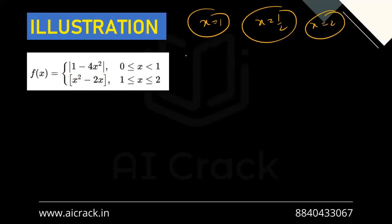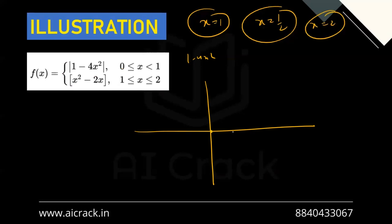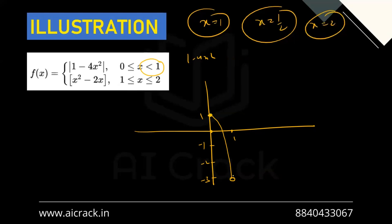Plotting 1 - 4x² over the range [0, 1]: at x = 0 the value is 1, and at x = 1 the value is -3. Since the range has an open boundary, we have an open circle on one end, a closed circle on the other. The function crosses zero at x = 1/2, which is our critical point for the modulus.